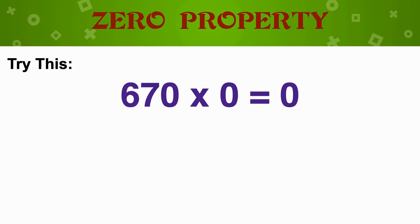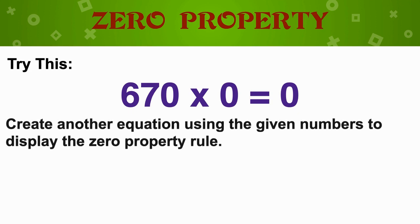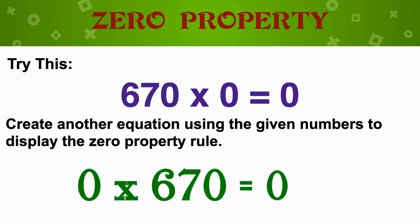Let's look at this: 670 times 0 is equal to 0. Can you think of another equation using the given numbers to display the zero property rule? If you said 0 times 670 is 0, then you are correct. Remember, the zero property rule tells us that any number times 0 is always going to be 0.